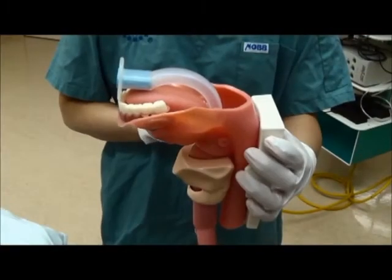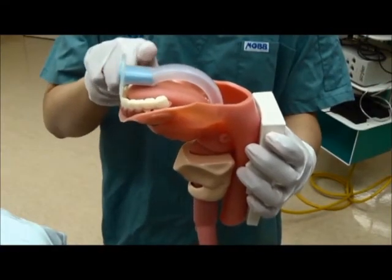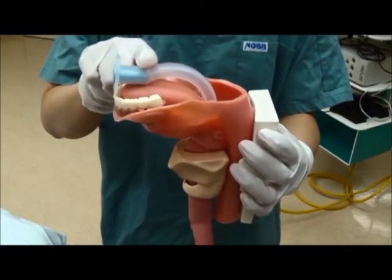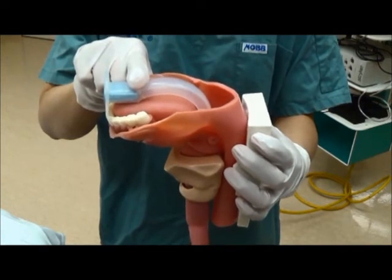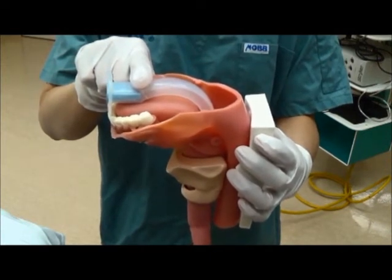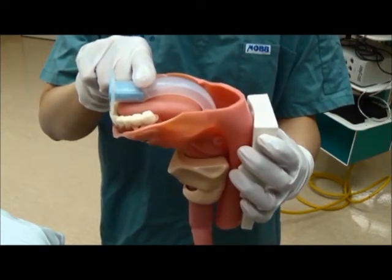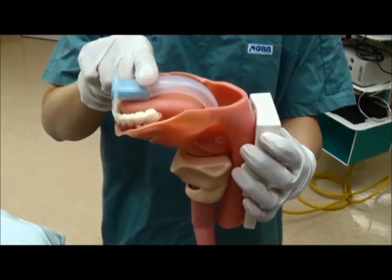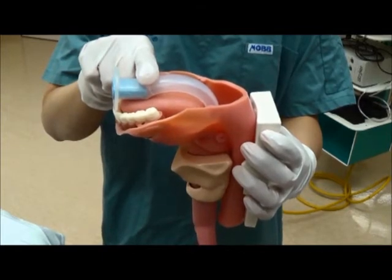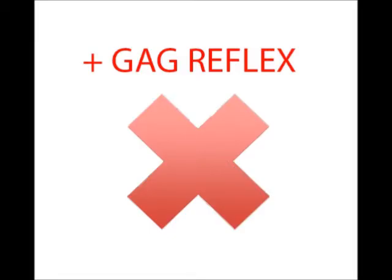Next, the oropharyngeal airway, or oral airway. It keeps the tongue out of the way in the oral cavity. Since the oral airway can stimulate the gag reflex and cause vomiting, it is contraindicated in the patient with an intact gag reflex.